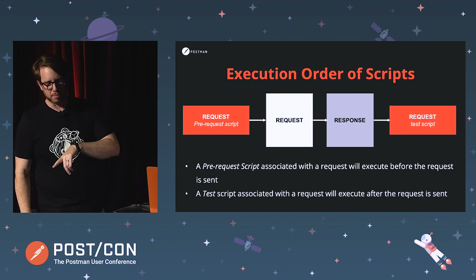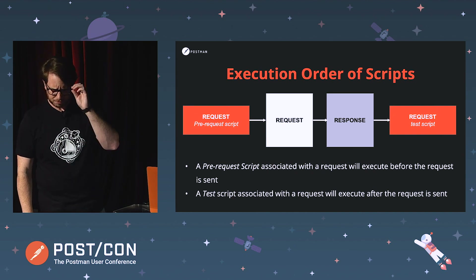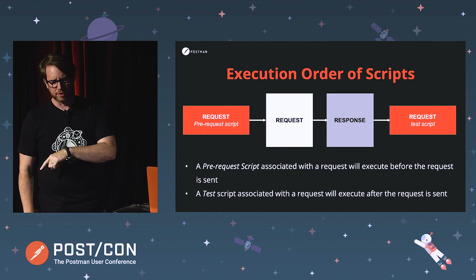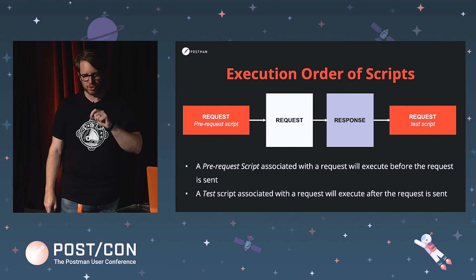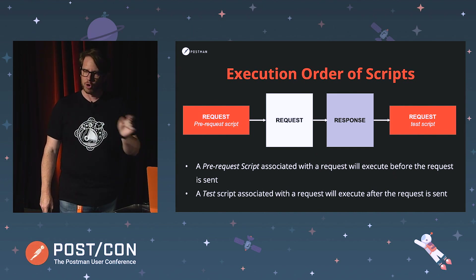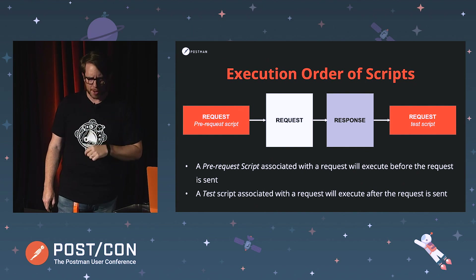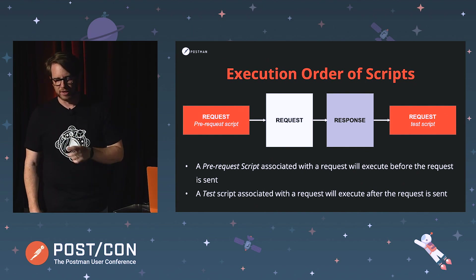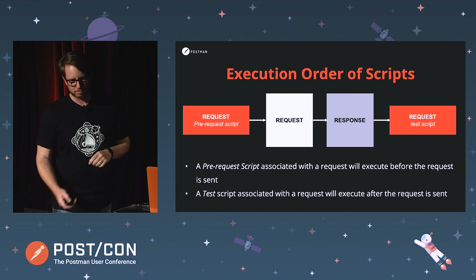We want to talk a little bit about the order of execution when it comes to scripts. The basic flow for a request goes: the pre-request script executes, then the request itself, you get your response back from your API, and finally the request test script executes at the end of it.